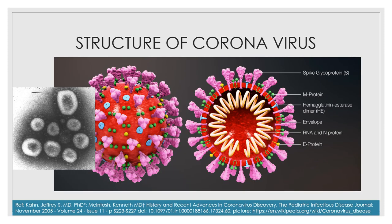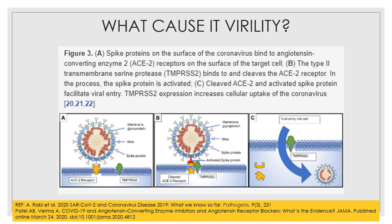As you can see, this is the structure of the coronavirus, and you can clearly see the spike glycoprotein which has a crown-like appearance. This spike glycoprotein is the one that causes the virality of the virus.